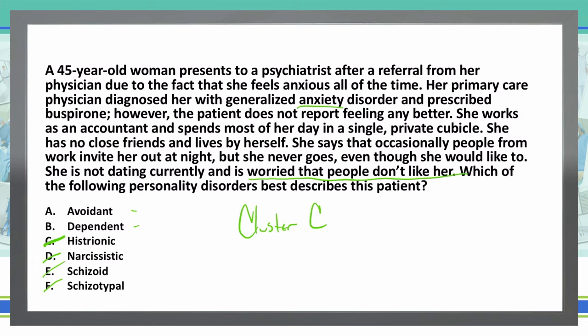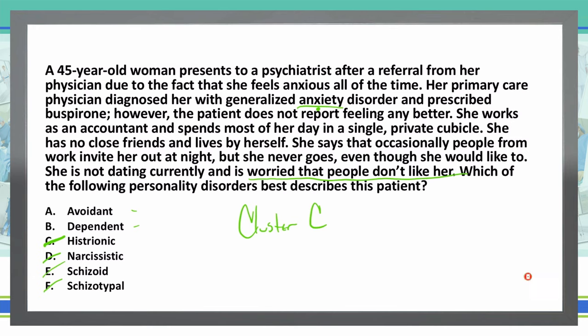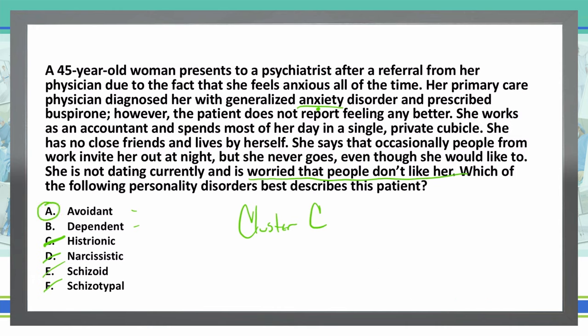Knowing just that information does not get us the full answer, so we need to break this down a little further. Are we dealing with avoidant personality disorder or dependent personality disorder? Looking at the vignette again — she is anxious and worried people won't like her. She's pulling back and withdrawing from social situations because she's socially inhibited. Therefore she's avoiding these situations, so we're going to go with avoidant, answer A, as our final answer.